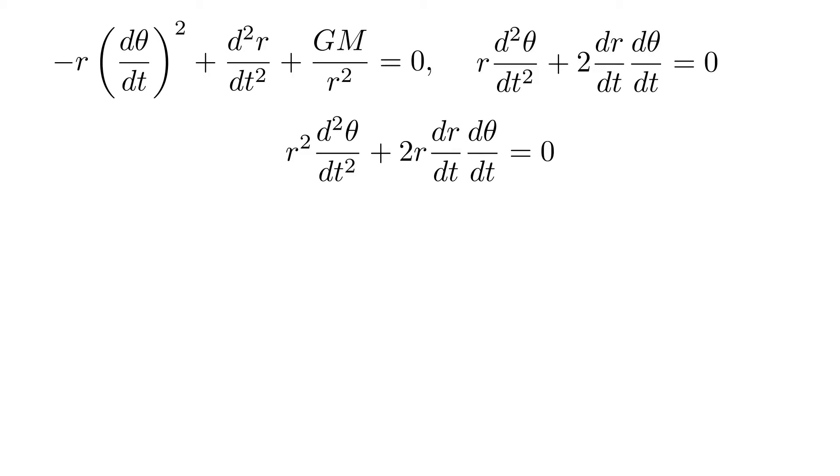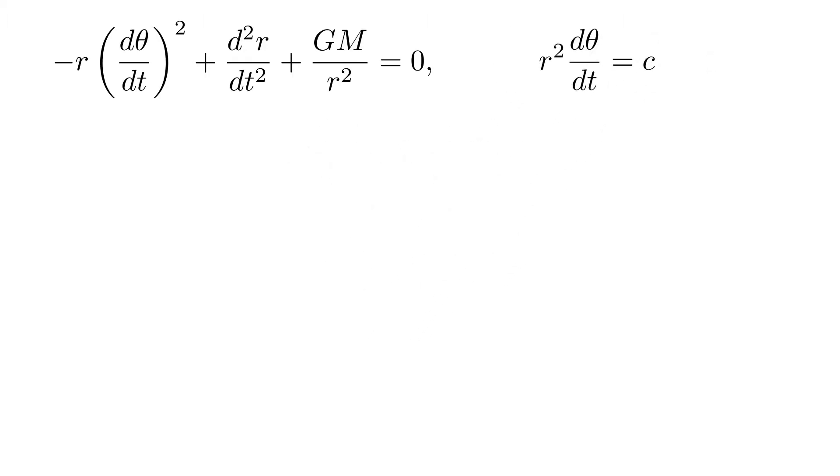By the product rule, this is just the derivative of r squared d theta dt. Thus, the second equation gives us that r squared d theta dt is a constant, which is actually the conservation of angular momentum.